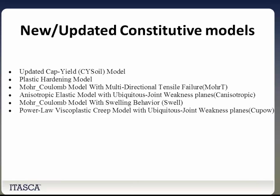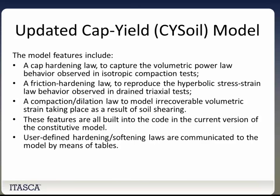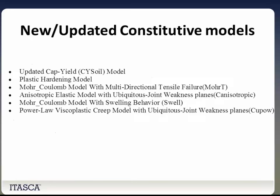I'm going to go through the new and updated constitutive models. We have the updated Cap Yield CY soil model, plastic hardening model, Mohr-Coulomb model with multi-directional tensile failure also known as the MOR-T model, anisotropic elastic model with ubiquitous joint weakness planes known as the canisotropic model, the Mohr-Coulomb model with swelling behavior known as the swell model, and the power law viscoplastic creep model with ubiquitous joint weakness planes, the CUPOW model. Note that the PH model and the Mohr-Coulomb model are both working in 3D and will receive updates as they are tested and verified.